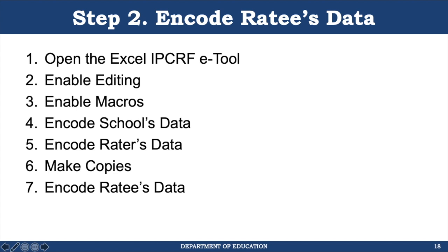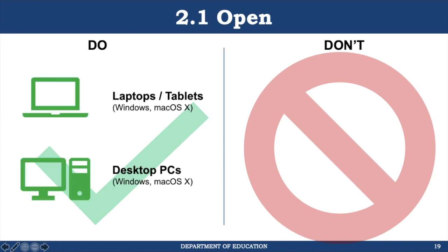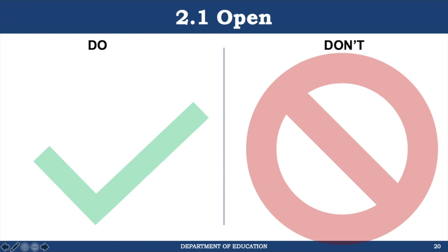To begin, we need to open the Excel file. When opening the IPCRF electronic tool, here are a few things you need to remember. You must open it on a laptop, tablet, or desktop PC running Windows or macOS. You cannot open the tool using any kind of mobile phone, tablets running Android or Windows RT, the iPad, Chromebooks, or other laptops running Windows RT. Here is a list of the programs and apps you can and cannot use to open the IPCRF electronic tool.